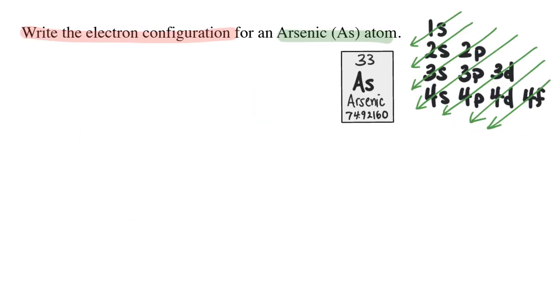Now we are ready to write the electron configuration for arsenic. Arsenic has 33 electrons. We know that because its atomic number is 33. Let's start at the first arrow. That'll tell us the first sublevel is the 1S. So I will write 1S. Remember that an S sublevel can hold a maximum of 2 electrons. So I'll write the superscript 2.